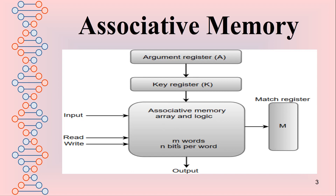The associative memory consists of m words and each word consists of n bits. Here we are giving the argument or query into the argument register. It will move to the associative memory. The associative memory finds whether the data is accessed or not. If it is found, the match register finds the matching.